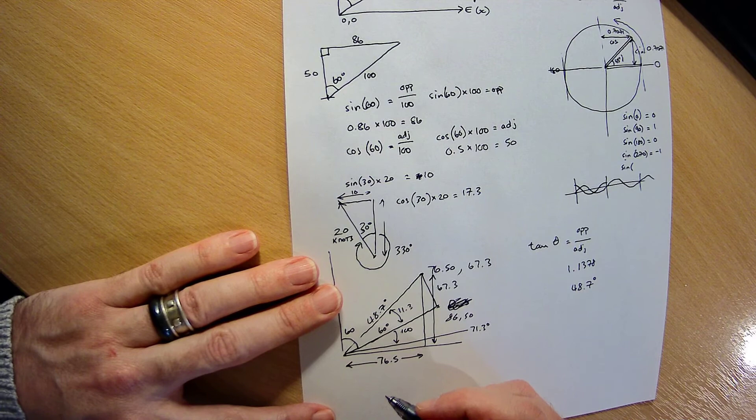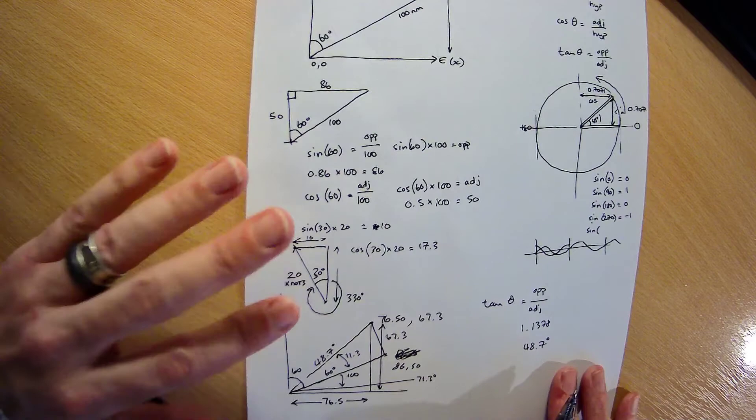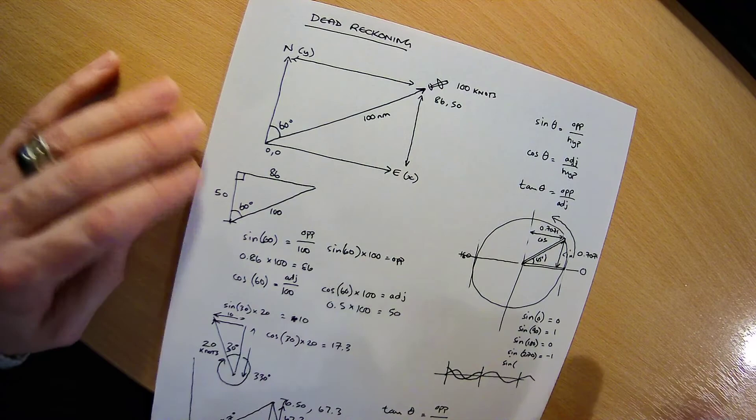We would still need to work out how far we've gone. And again, you can use trigonometry to do that. But it's quite a nice way of doing it, isn't it? So yeah, I've written a spreadsheet to do this really quickly so you don't have to work it all out by hand. But yeah, so that's dead reckoning.